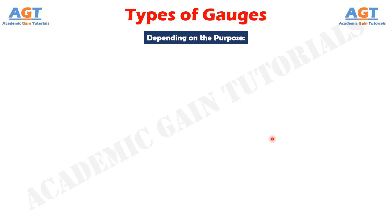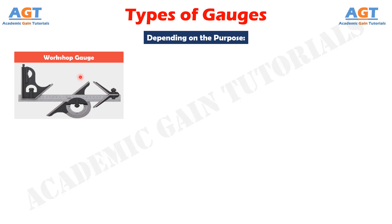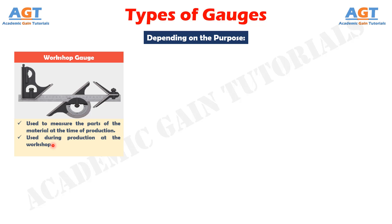Depending on the purpose of use. Workshop gauge. A workshop gauge is defined as the gauge which is used to measure the parts of the material at the time of production. This gauge is used in the production time at the workshop, so this gauge is named as the workshop gauge. The workshop gauge is designed such that the tolerance is in the center line, making it very useful in the plants or workshops rather than the others.